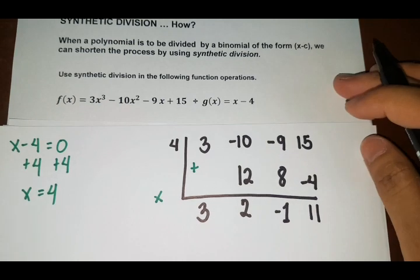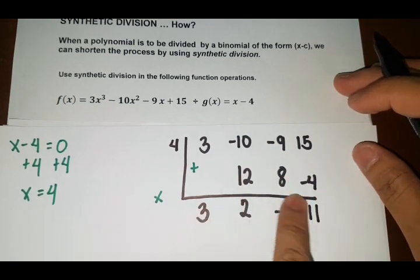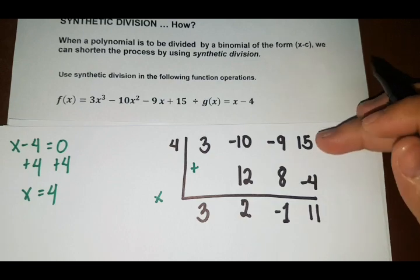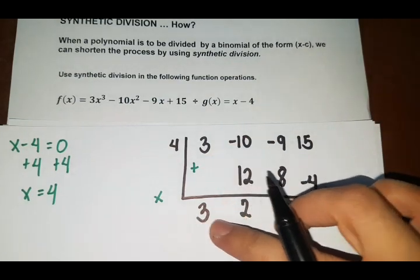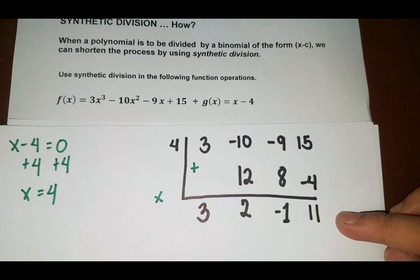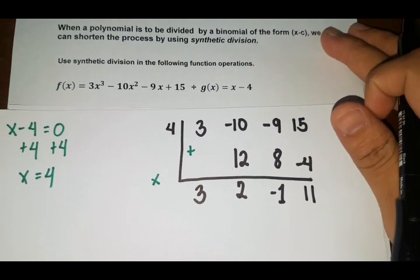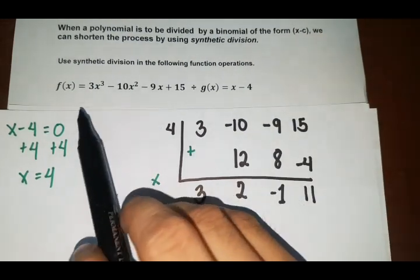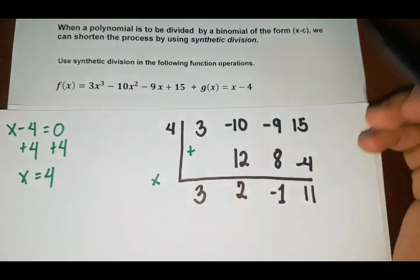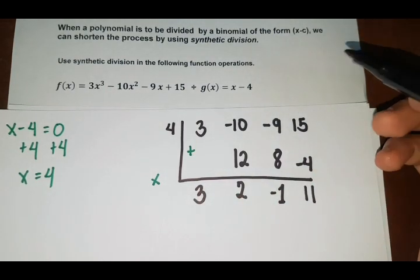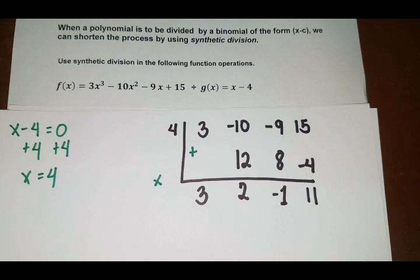So this sum or the sum of these integers will be our coefficients of our quotient. So since we are dividing x cubed to x, so x cubed divided by x, that is x squared. So remember this.